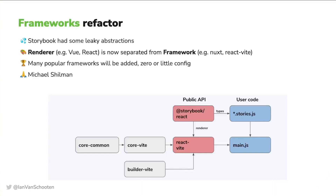Storybook has had the concept of frameworks forever — React, Vue, Svelte, etc. But it turned out not to be the right level of abstraction because those frameworks also included things like Webpack config. So now renderers have been broken out as only those parts dealing with rendering to the DOM, and frameworks encompass the combination of renderer, builder, and configuration. This will allow us and the community to create frameworks much more easily that can be used out of the box without requiring users to override a bunch of config. I've got to give a shout out to Michael Shulman and the rest of the Storybook team for the work that they put into this refactor — I think it's going to be huge.